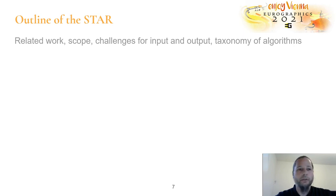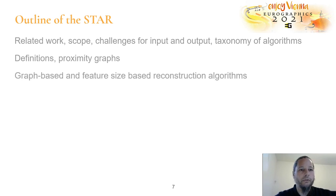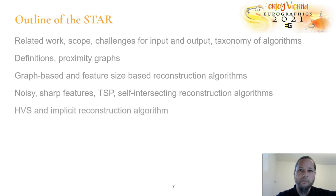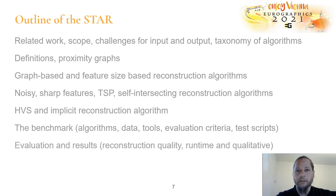The outline of this STAR is: first I tell you about related work, define the scope of this STAR, what are the challenges for input and output reconstruction, the taxonomy of the algorithms, then some definitions, proximity graphs, the first category of graph-based and feature size-based reconstruction algorithms. Then my co-authors will continue with how to reconstruct noisy points, sharp features, the travelling salesman problem and how it is related to curve reconstruction, self-intersecting curves, human visual system-based algorithms, and implicit curves. Then we'll mention the benchmark, how it is built, and evaluation and results. Finally we sum it up and give a conclusion of future work.